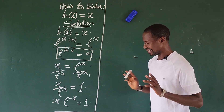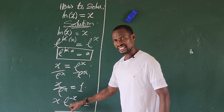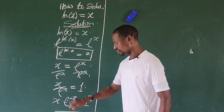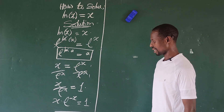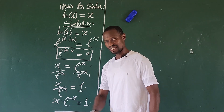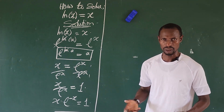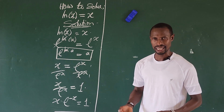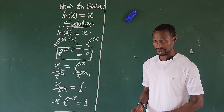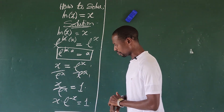What we can spot here is that we have this special constant e raised to minus x, and we have just x here. What comes to mind is the product log, or the Lambert W function. We can apply the Lambert W function.